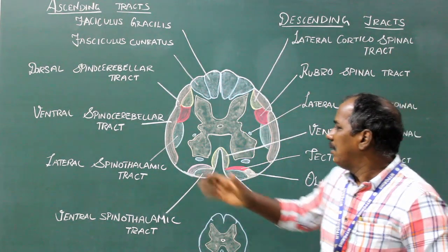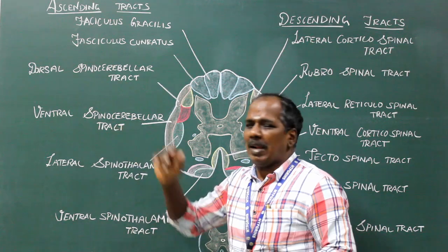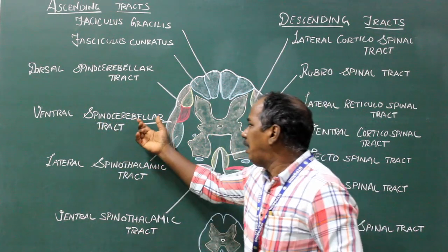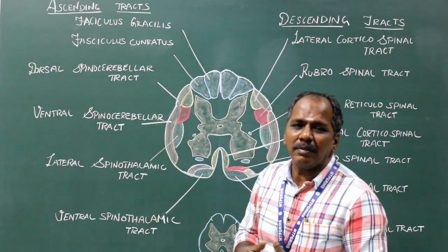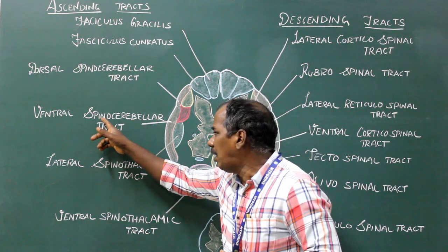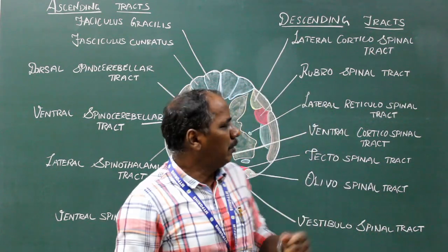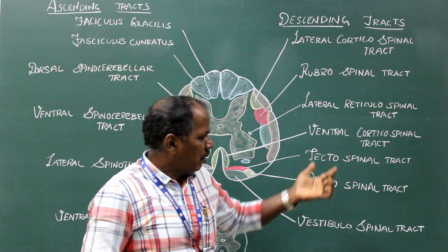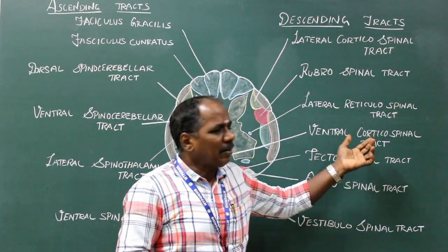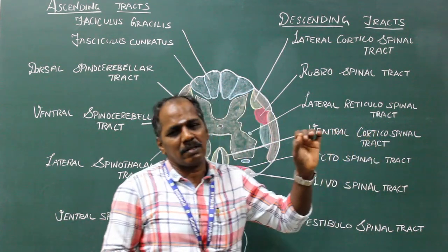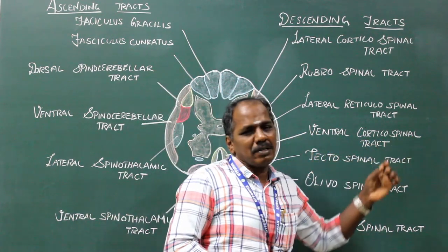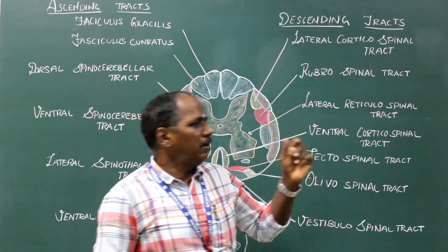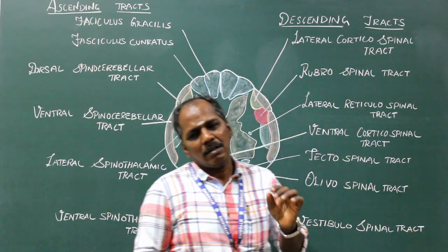For example, the spinocerebellar tract: 'spino' — the first term — represents the origin of the tract, and 'cerebellar' represents the termination of the tract. So it arises from the spinal cord and ends in the cerebellum. Another example is the corticospinal tract: the first term represents the origin from the cerebral cortex of the brain, and 'spinal' represents the spinal cord.